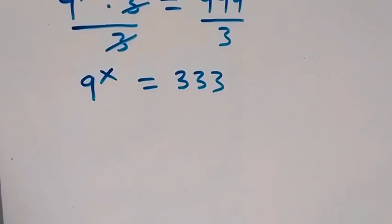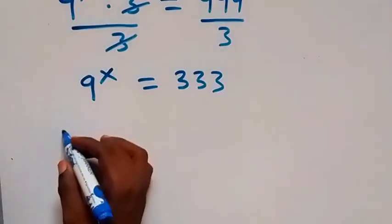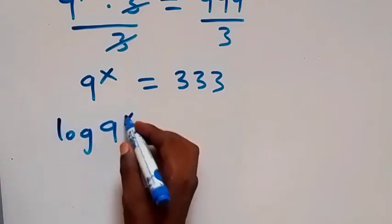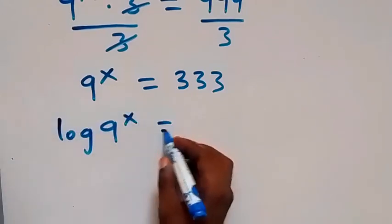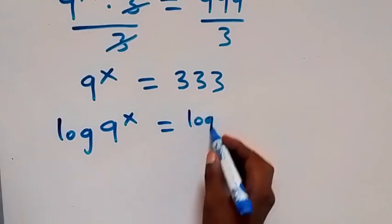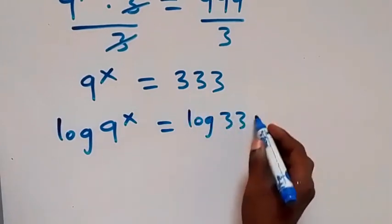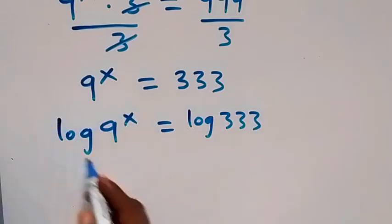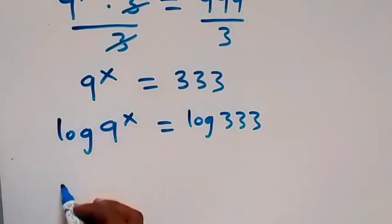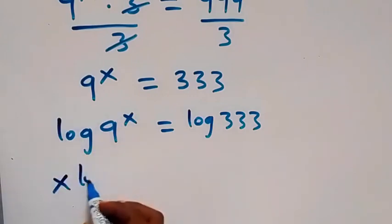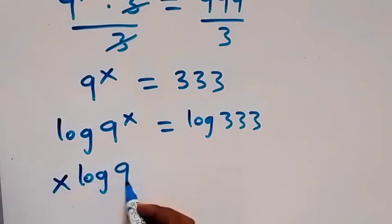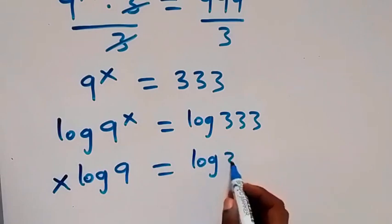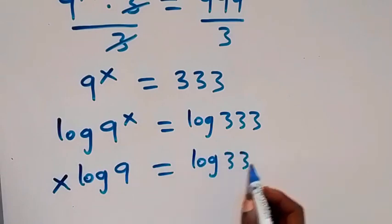Then in the next step, we take the log on both sides. We have log of 9 raised to the power x equals log 333. Then applying the power rule of logarithms, we bring the power x to the front, giving x times log 9 equals log 333.